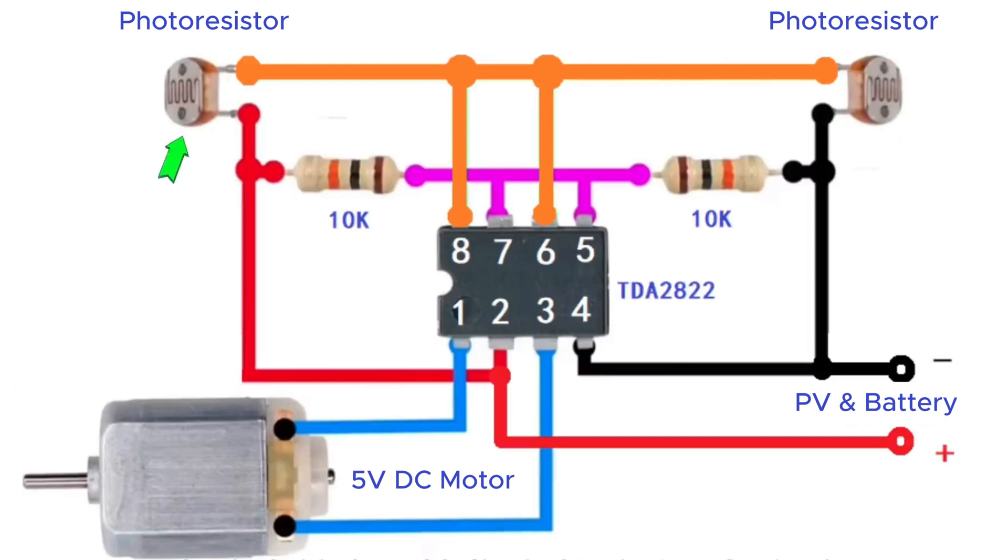If the left photoresistor receives more light, pin 1 of the chip outputs a high voltage and pin 3 outputs a low voltage. This makes the motor rotate forward. Conversely, if the right photoresistor receives more light, pin 1 outputs a low voltage and pin 3 outputs a high voltage. This causes the motor to rotate in the opposite direction.